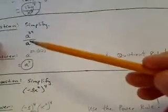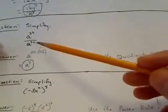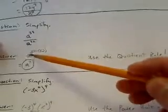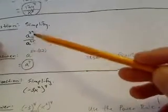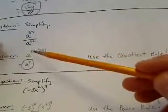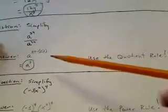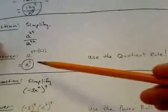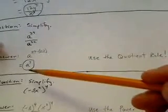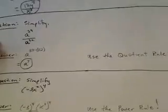As long as we have the same base, what we can do is subtract the numerator minus denominator exponents. So we write it as a — the common base — and take 39 minus 32. So we have 39 minus 32 is 7, giving us a to the 7th power — final answer. That's using the quotient rule.